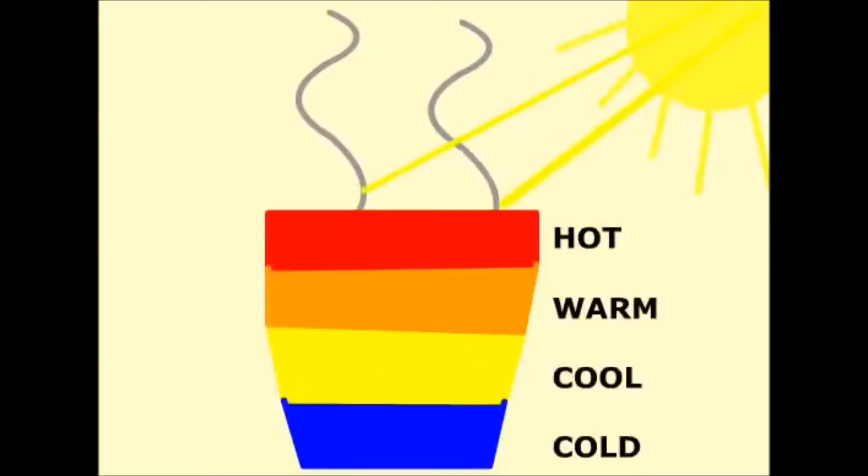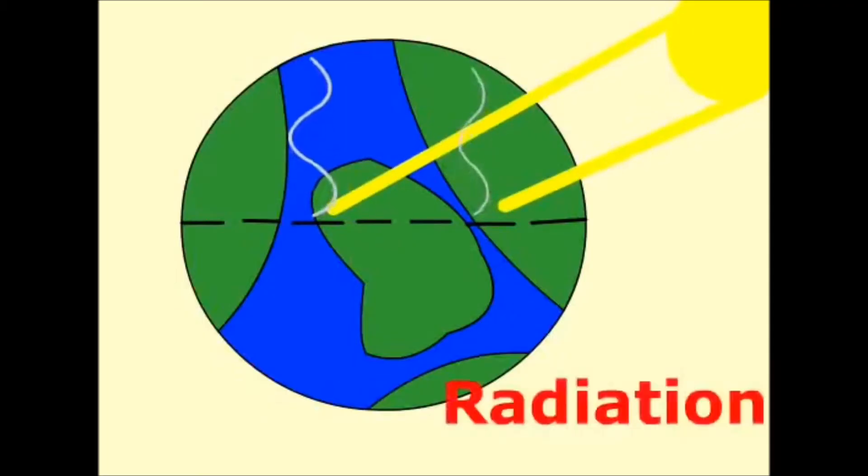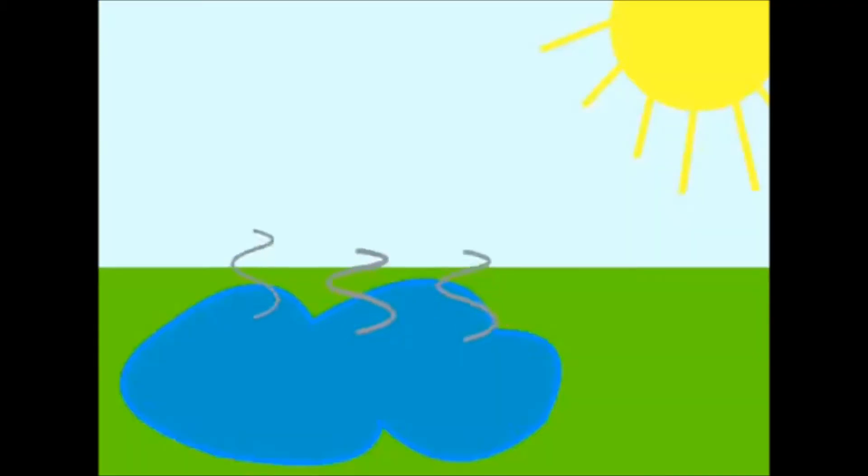Continuing on with the lesson, convection currents are formed when the sun emits light and heat to an area on Earth. The heat is transferred to everything in the area through a means of energy transfer known as radiation. So now everything in that area is being heated, from trees to bodies of water.